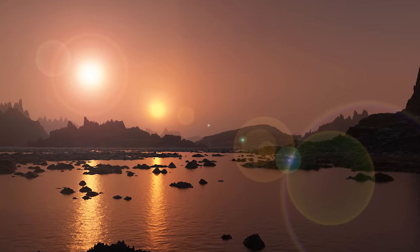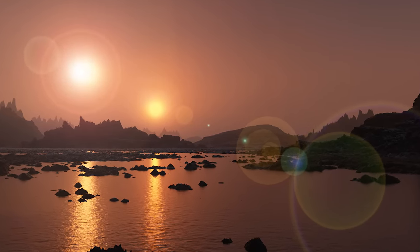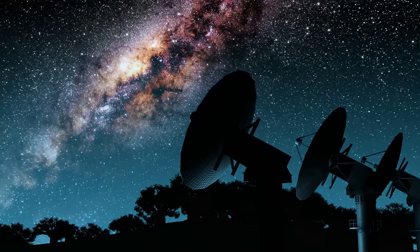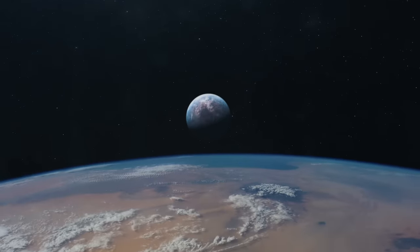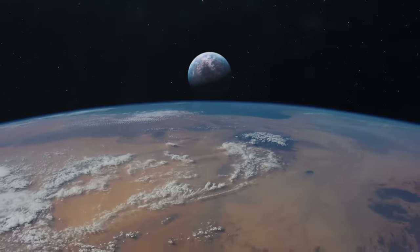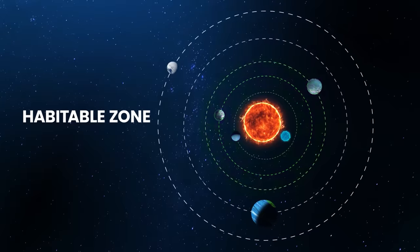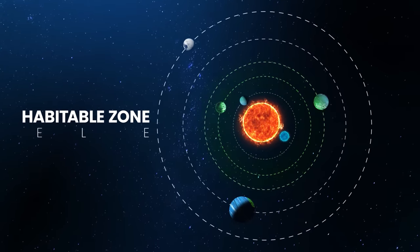If you're standing on the surface of one of these planets, you'd be able to see a binary sunset. But Kepler's legacy is that it successfully found Earth-sized worlds orbiting at a safe distance from their host stars inside what's known as a habitable zone or Goldilocks zone.